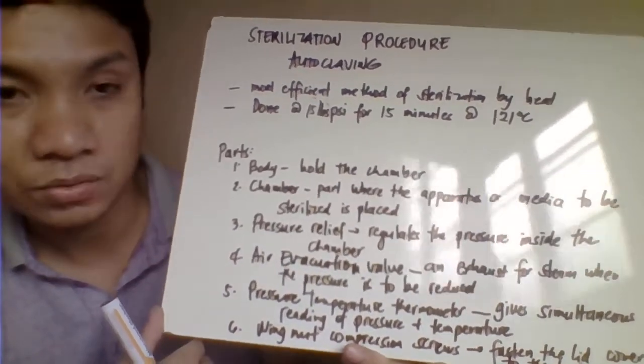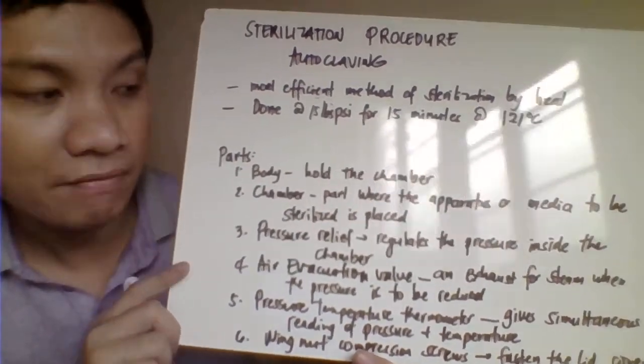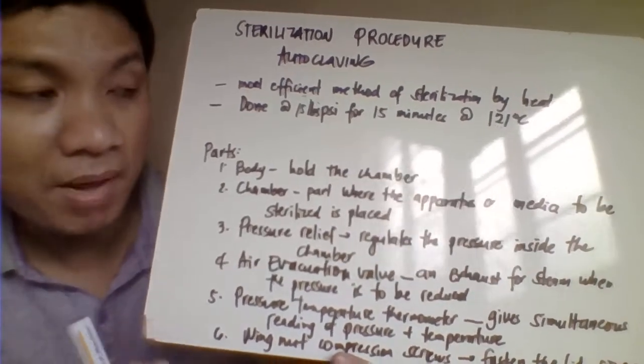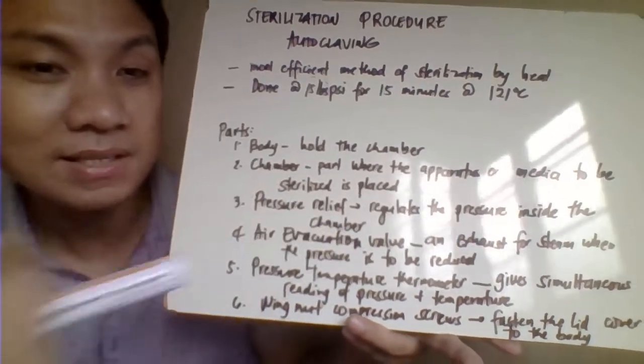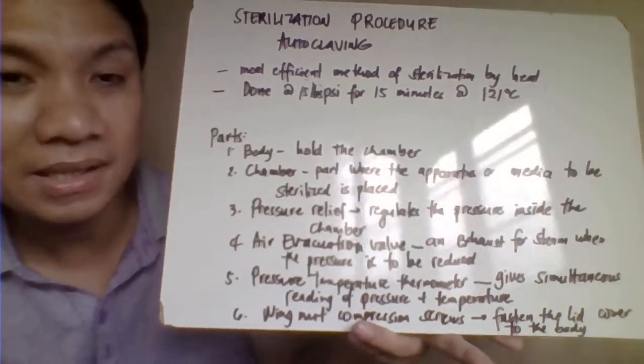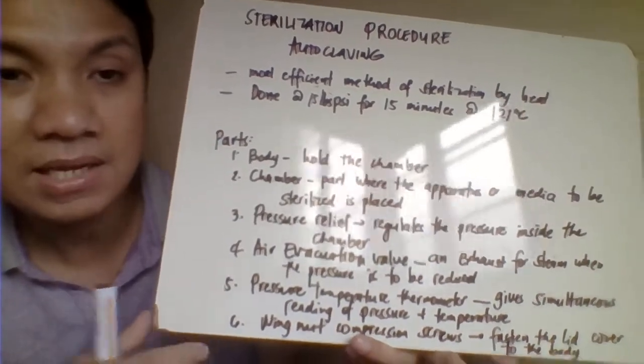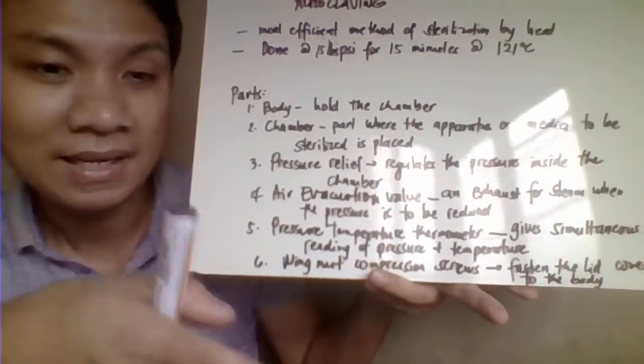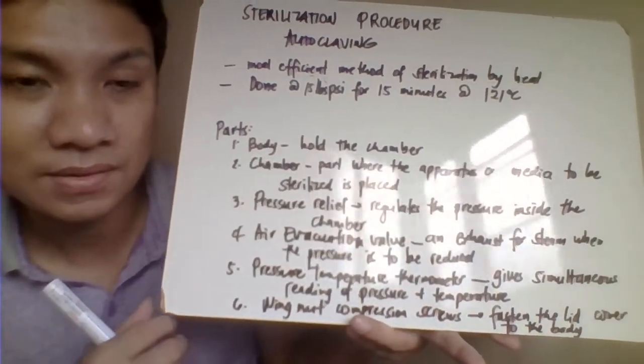We have here the basic parts of our autoclave. Although this varies depending on the type and model of your autoclave, most likely these are the parts, only that they may differ in location but they are all present. First, we have the body, which is the entire body of the autoclave.